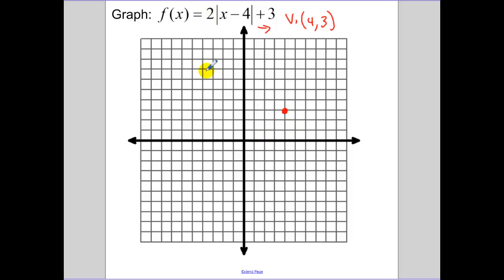The 2 tells us the two slopes of our sides. So we go up 2 over 1, up 2 over 1, up 2 over 1. And the same thing on the other side, just these are the negative versions. And then we have our absolute value graph.